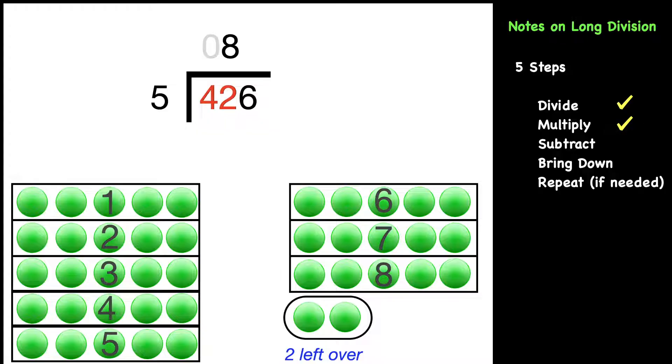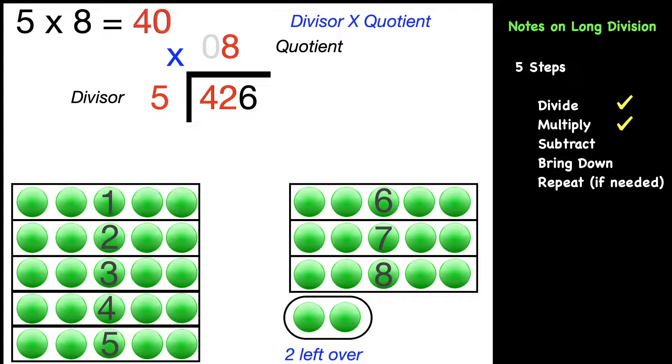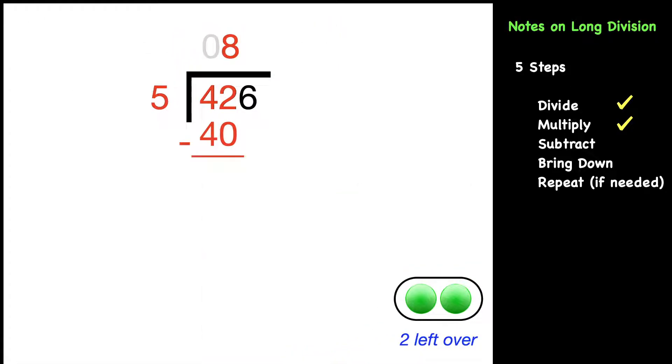Our next step is to multiply. We're going to multiply the divisor, which is five, times our quotient of eight. So five times eight equals 40. That 40 goes underneath the 42. And now we're ready for our next step, which is to subtract. 42 minus 40 is two. And you might remember at the bottom there, we did have that two left over. So that kind of is showing why that is there.